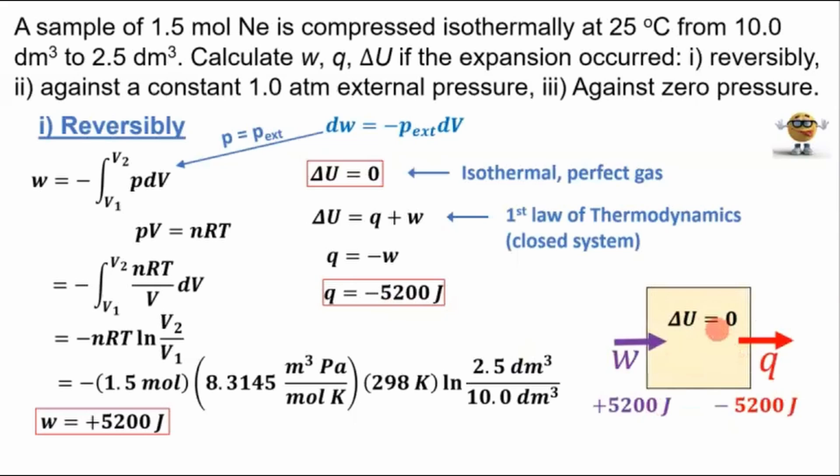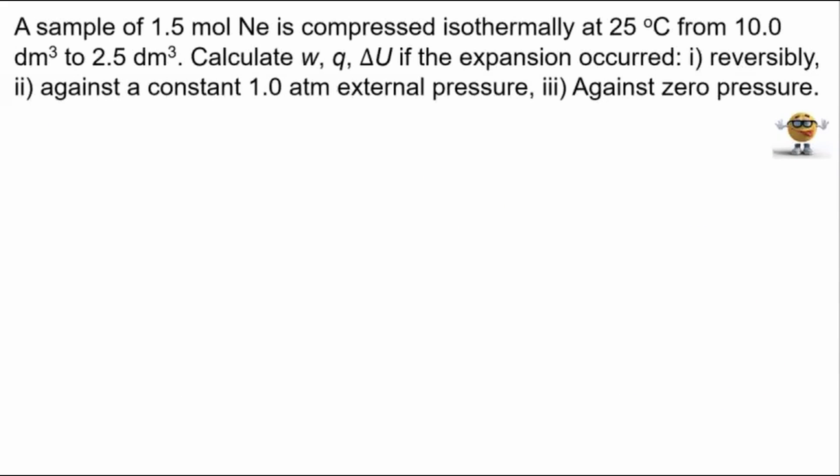What this looks like, if you like pictures, and I love pictures, this is our system here. We have 5,200 joules of energy as work going into the system, but then it's losing 5,200 joules of energy as heat. So the energy gained is equal to the energy lost, so the total change in internal energy is zero for this reversible process.